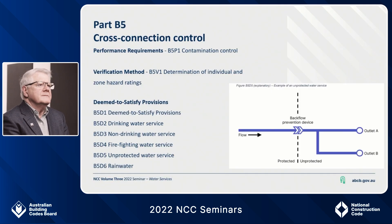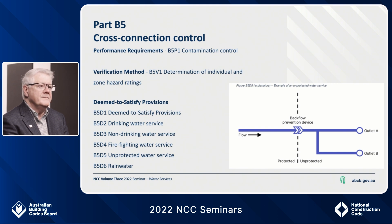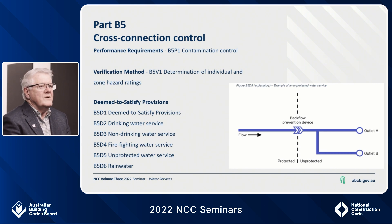Let's look at Part B5 in a little detail. We have a performance requirement: water services must be designed and installed so as to operate in a way that avoids the likelihood of contamination of any part of the drinking water supply and minimises any adverse impact on the building occupants, the network utility operator's infrastructure, property and the environment. We have added a verification method for assessment of hazard ratings, plus added a number of the DTS provisions.